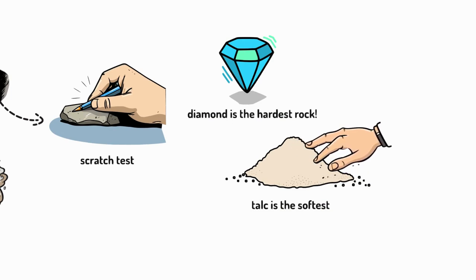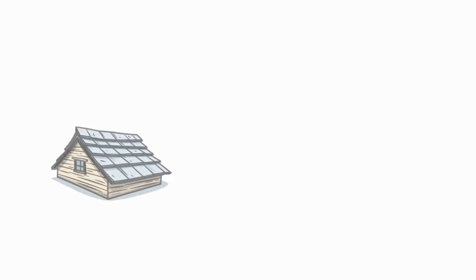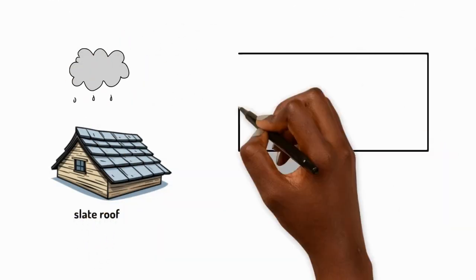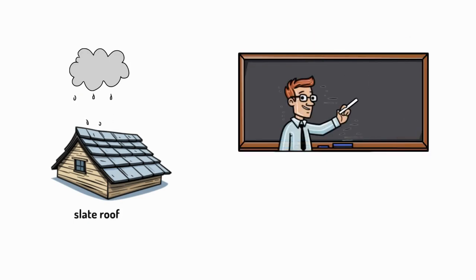We use rocks for different things based on their properties, like slate for roofs because it keeps water out, or chalk for drawing as it wears down easily.